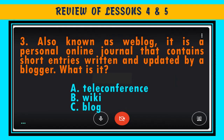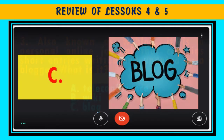Question 3. Also known as web blog, it is a personal online journal that contains short entries written and updated by a blogger. What is it? A. Teleconference, B. Wiki, C. Blog. If you answered letter C, good job, you are correct.